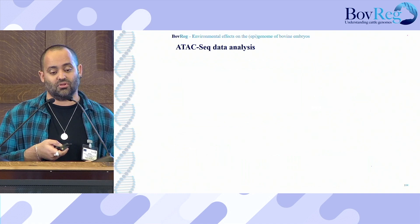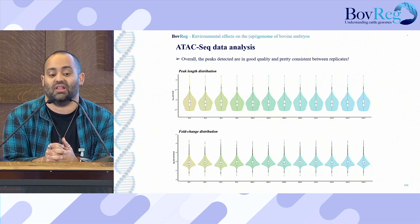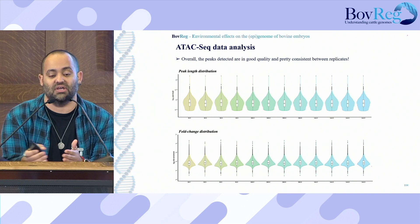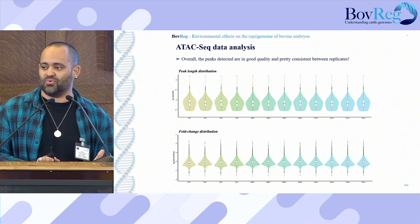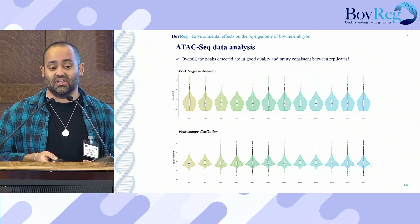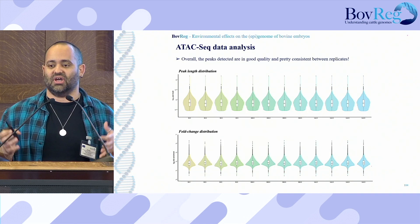Still looking at the quality of the ATAC-seq data, we can also examine the peak length distribution and fold-change distribution for each replicate, and these are consistent across all replicates. So we have good quality data even with the low input of 5,000 cells, and we decided to proceed and use this data to identify differentially accessible regions for the metabolic experiment.